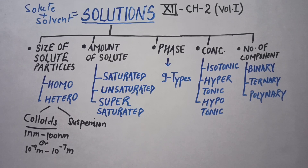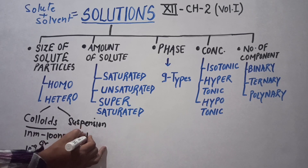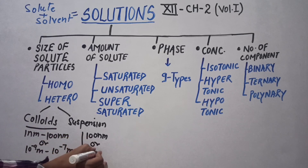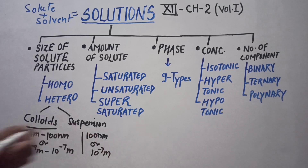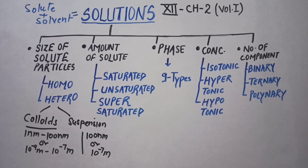Suspensions appear heterogeneous because you are able to see the solute particles. Whereas colloids seem like homogeneous, but in general they are actually heterogeneous because you are able to see the particle size under the microscope.